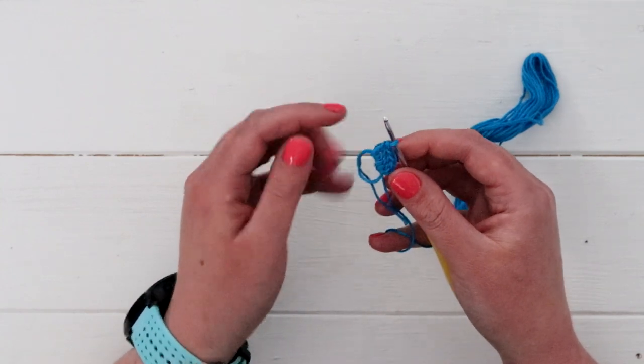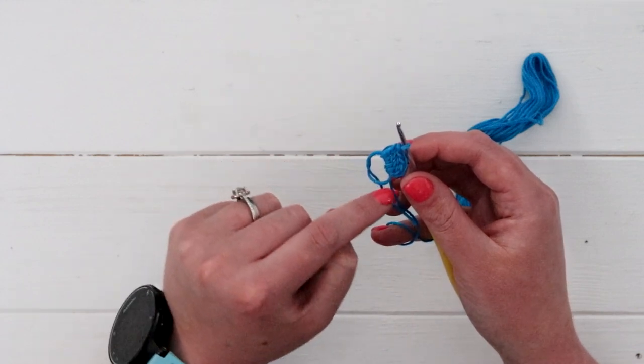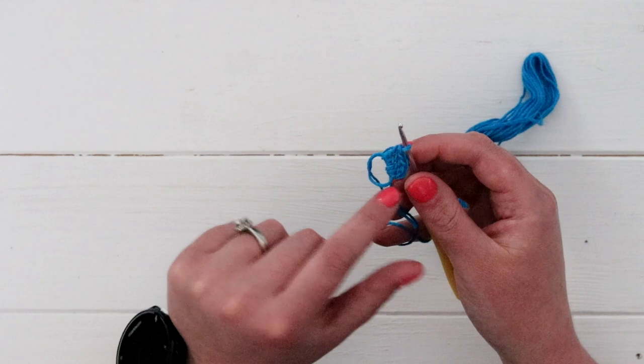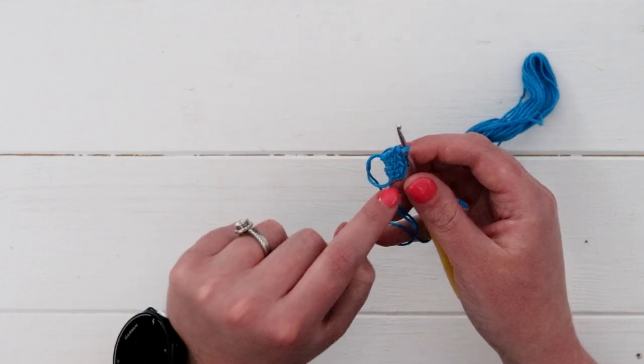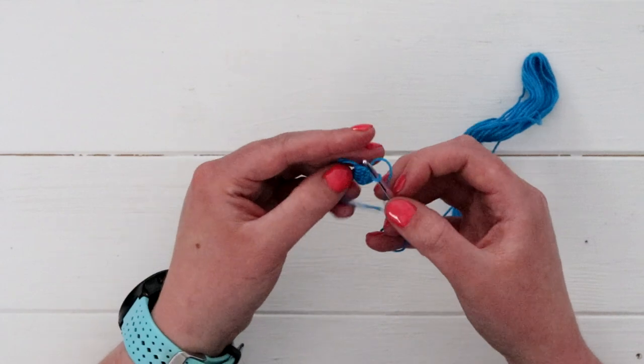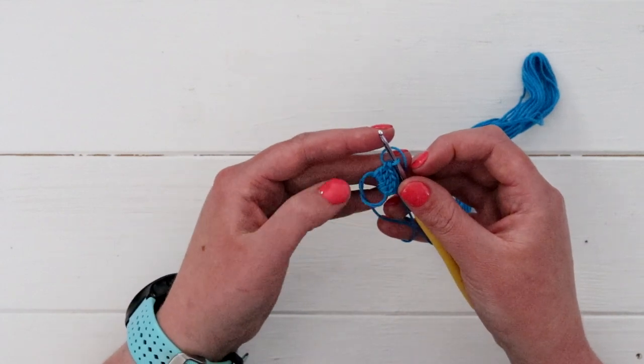But just take a couple minutes to finish. Again, we're crocheting 15 more double crochets. So, you should have 16 total, and that counts that chain two that we started with. So, go ahead and pause the video and just finish this first round.